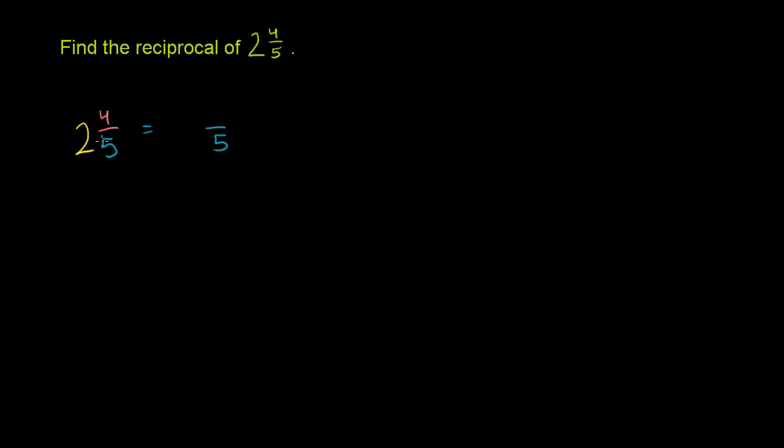But the numerator is now going to be 5 times 2 plus 4. And that's because 2 is 10 fifths, or 2 times 5 fifths. So let's write it like that. So it's going to be 2 times 5 plus 4.